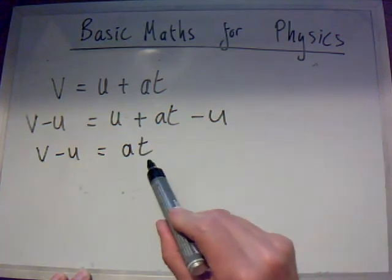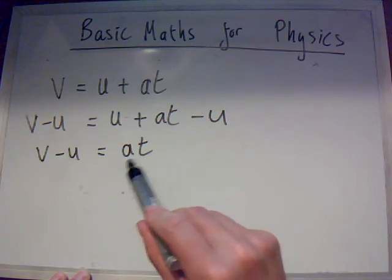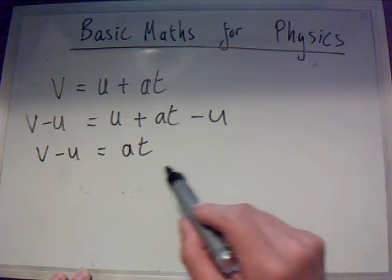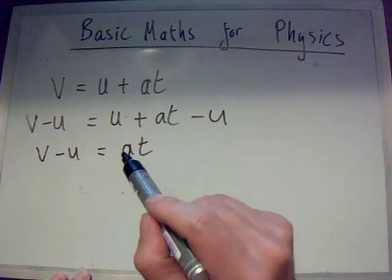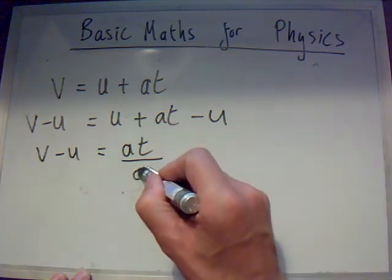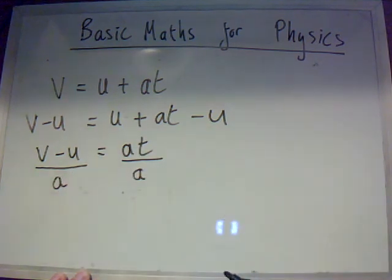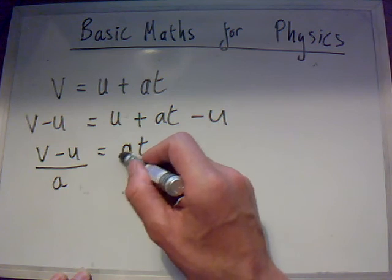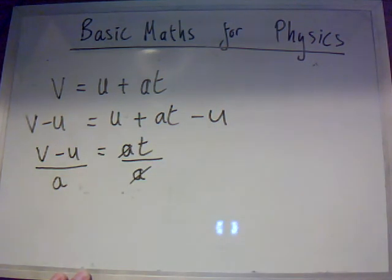Now that we've just got T multiplied by another letter or number on that side, and no additions or subtractions, which is better. What do we do now? At this stage, now we divide through by A. So AT over A is equal to V minus U over A. Now, A divided by A can cancel. It's just one. One times T is T. So T equals V minus U divided by A.